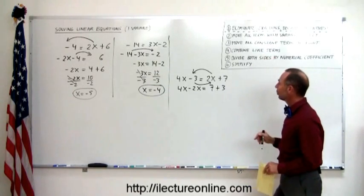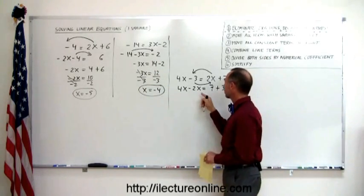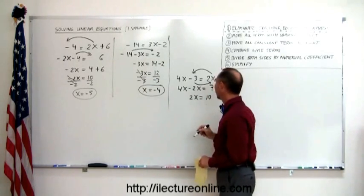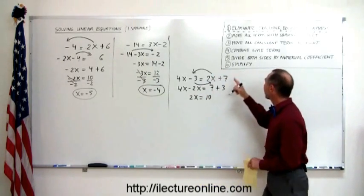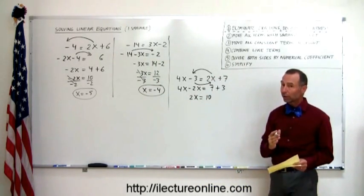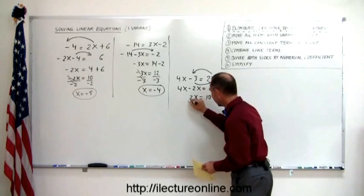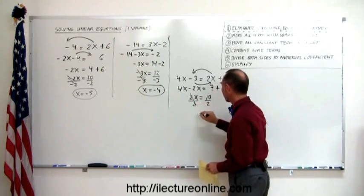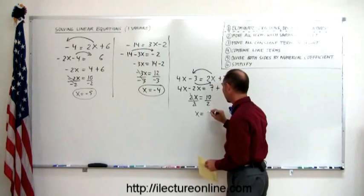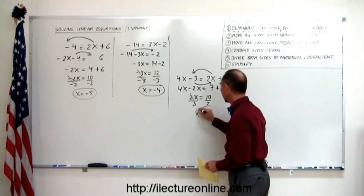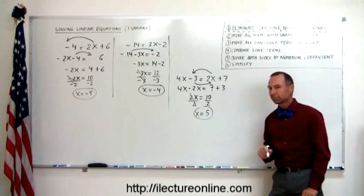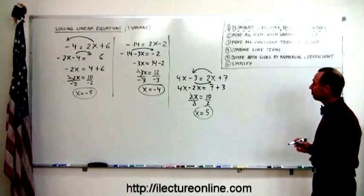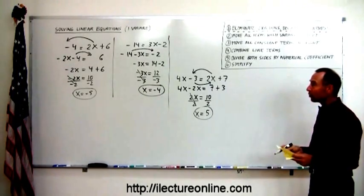Next, combine all like terms: 4x minus 2x is 2x, and 7 plus 3 is 10. Then the next step: divide both sides by the numerical coefficient in front of the variable, which is 2. Divide both sides by 2 — this cancels — and we have x equals 10 divided by 2, which is 5. Looks pretty straightforward; hopefully it's beginning to make sense.